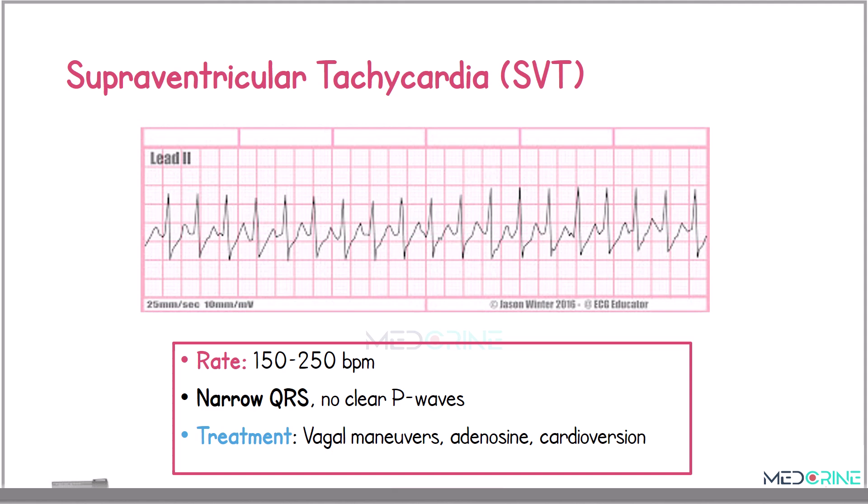Then we have supraventricular tachycardia, or SVT. SVT presents as a rapid heart rate between 150 to 250 beats per minute with narrow QRS complexes and no clear P waves. Treatment includes vagal maneuvers, adenosine administration, and synchronized cardioversion.